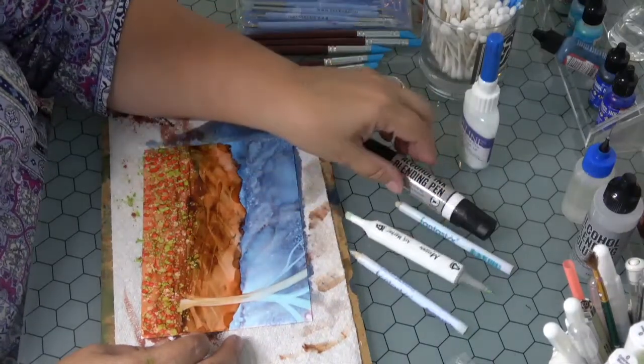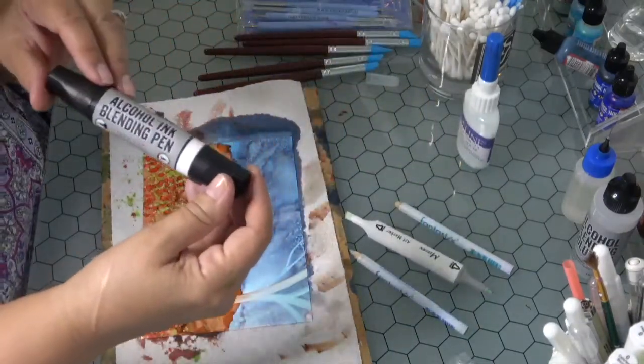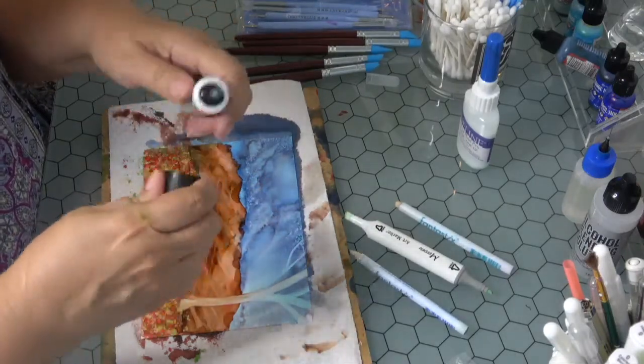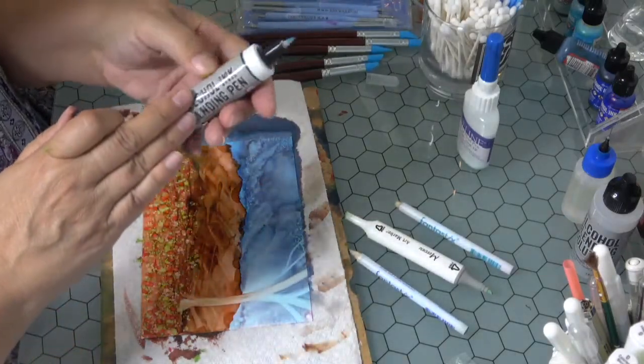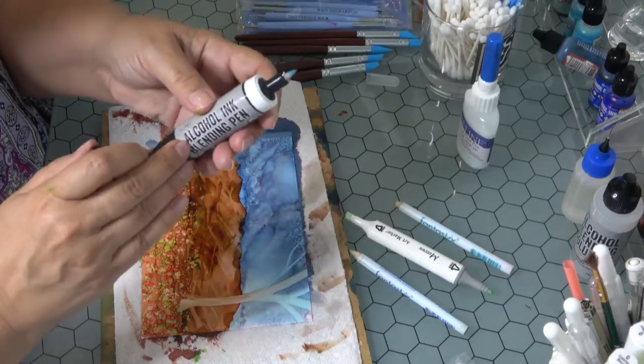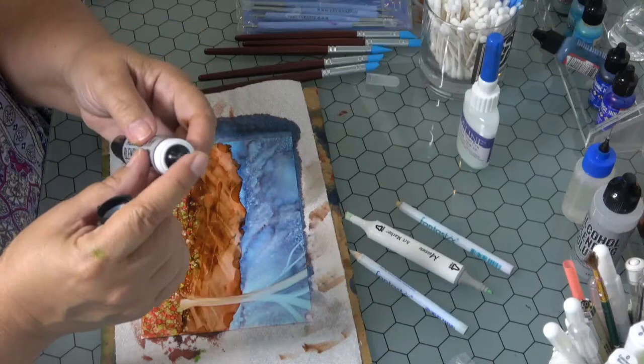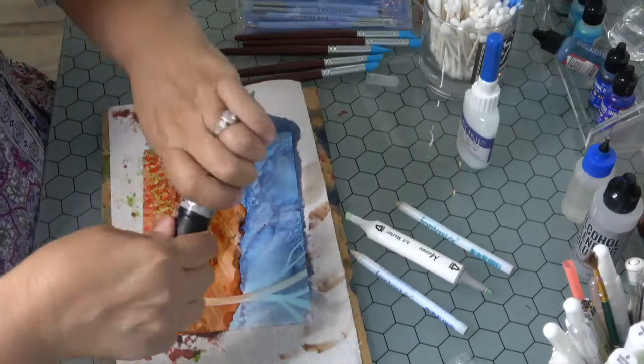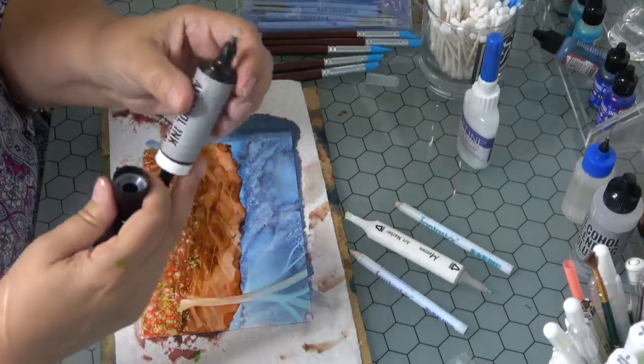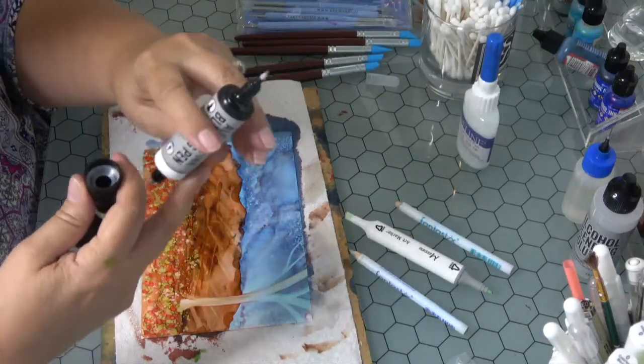Another one is this alcohol blending pen. This comes full with your alcohol blending solution and after a while it will be gone and evaporate. One end is a fine tip nib pen, the other end is a little bit finer. So you've got one that's a little thicker, finer, they're both considered fine.